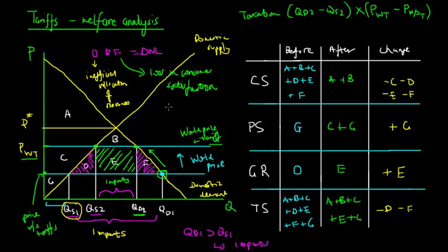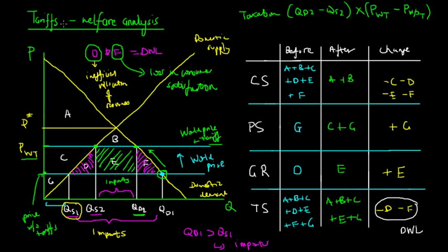The deadweight loss is a mathematical representation of inefficiency: D reflects not minimizing opportunity cost of resources, and F reflects not maximizing living standards. By removing or reducing tariffs through trade liberalization, this deadweight loss of D plus F is eliminated, improving material living standards and total surplus in the economy.